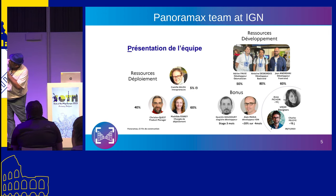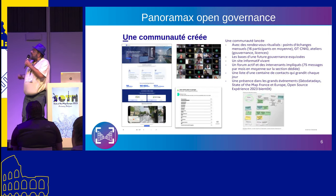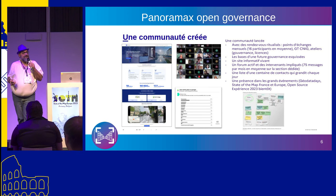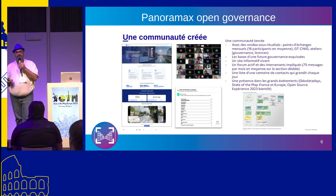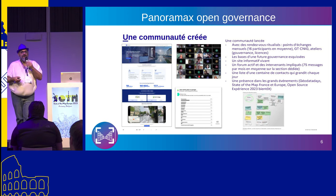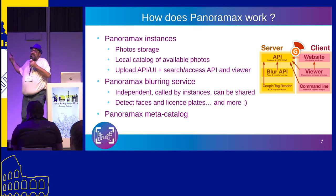The team is small — three full-time positions — and I'm part of it. We released the first version in May/June, based on existing code that we improved and added features to. We also need open governance, so what we do at the Geographic Institute is try not to decide things by ourselves but with the community. We hold monthly online meetings to discuss priorities.